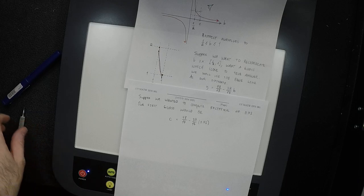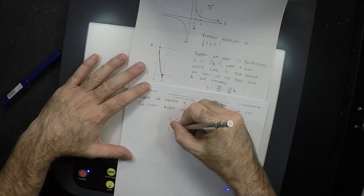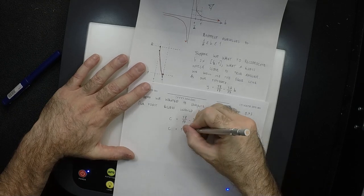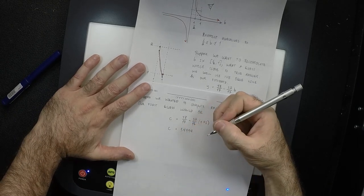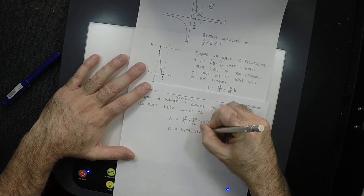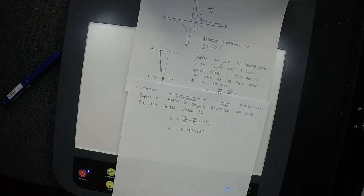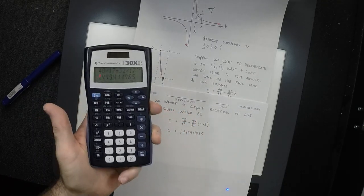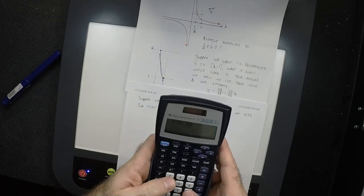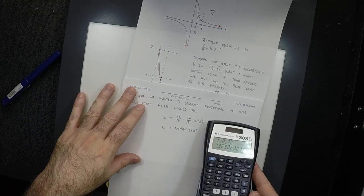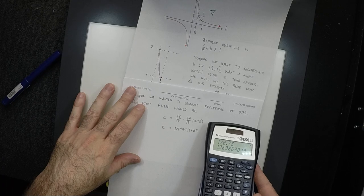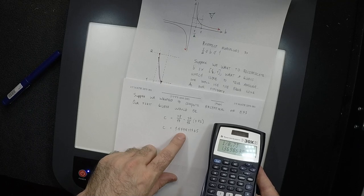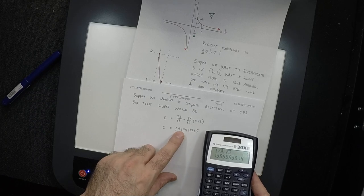Let's type it in: 48 over 17, minus 32 over 17, times 0.73. So our first guess would be C equal to 1.4491176... Just as a check for reasonableness, let's use a machine that already has functioning division and actually compute 1 over 0.73. That gives 1.369 something. So our first guess of 1.449 is close-ish — it could be worse. This is going to be our first guess.